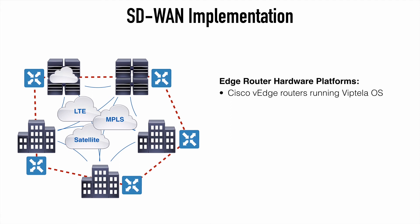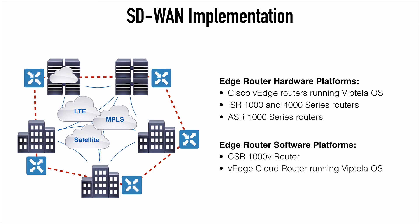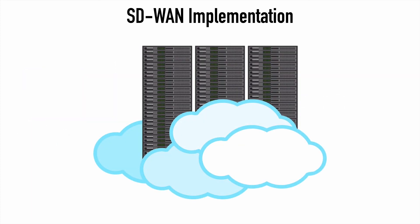As for the edge routers themselves, these can be either a hardware or software platform. Hardware platforms include Cisco V-edge routers running on the Viptela operating system and certain integrated service router and aggregation service router models. Virtual platforms include the V-edge cloud router running Viptela OS and cloud services router models running IOS XE SD-WAN software. So that's a look at Cisco's SD-WAN based on Viptela and how we would commonly see that implemented in an enterprise network.